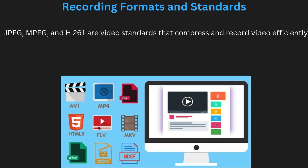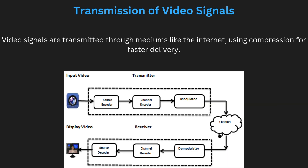Recording formats and standards include JPEG, MPEG, and H.261. There are different formats for recording and compressing video. JPEG is mainly used for still images but can also be applied to video. MPEG is a widely used standard for compressing video to reduce file size while maintaining quality — for example, MPEG-4 is commonly used for streaming videos online. H.261 is a video compression standard developed for video conferencing, offering lower bit rates and efficient compression, helping ensure video can be stored and transmitted efficiently without losing quality.